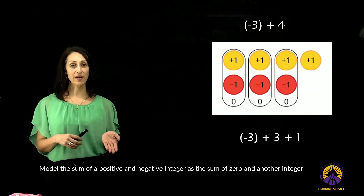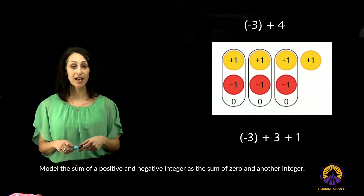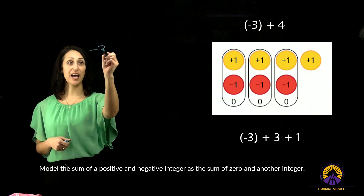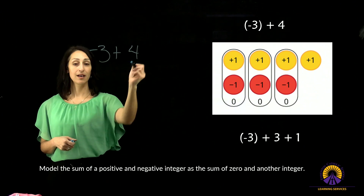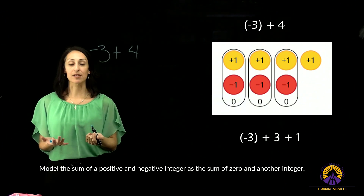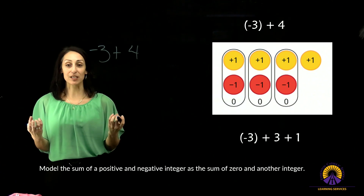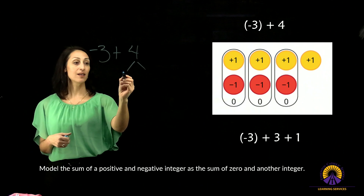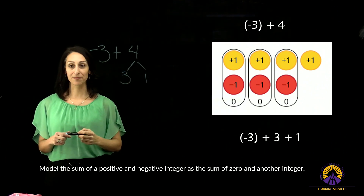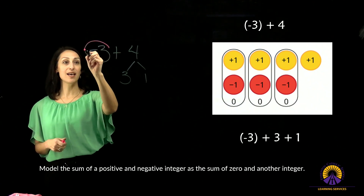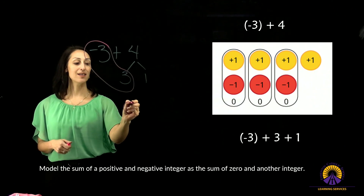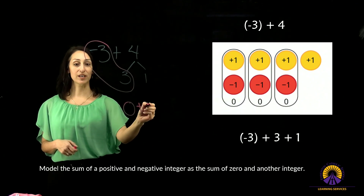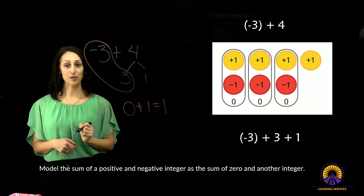In our curriculum, we do have the expectation to model the sum of a positive and negative integer as the sum of zero and another integer. How are we going to do that? Let's use this example: I have my negative three and I'm going to add four. I have worked with students before about decomposing numbers — I know I can take a number and break it apart into different pieces to make it work for me. So I'm going to take this four and, because I have a negative three, break it apart into three and one. I can take those three holes and add three piles to get a value of zero. There is the negative and positive integer adding with the sum of zero and what's left over — another integer. My answer is going to be one.